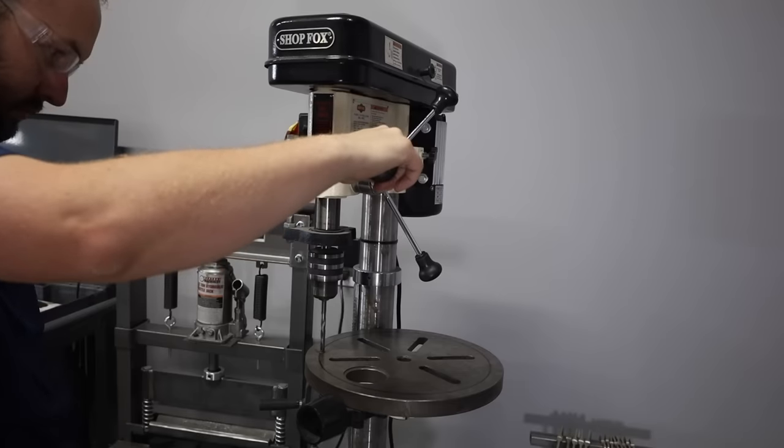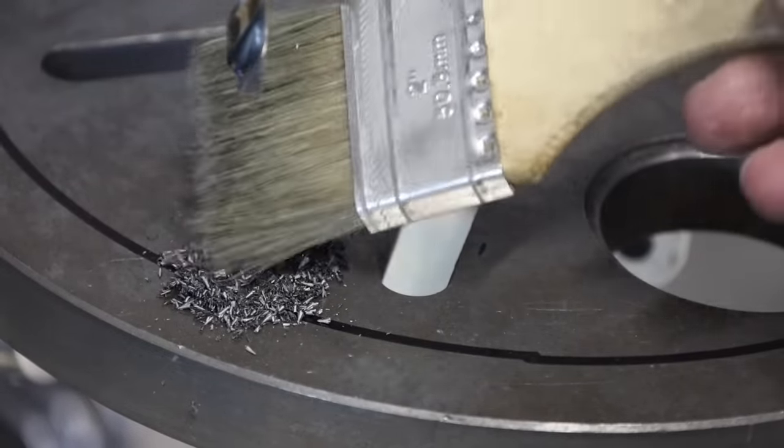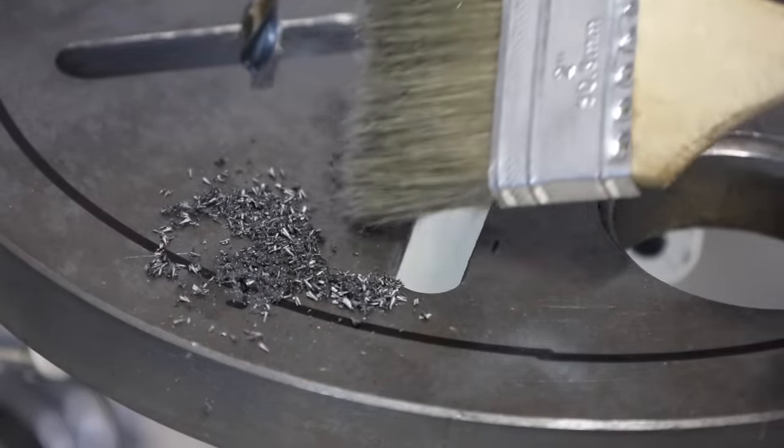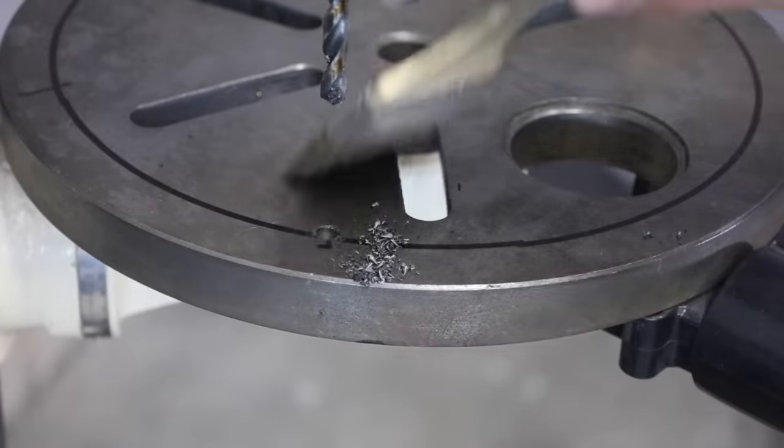You'll notice as I drill here, the cast iron drills quite a bit differently than you'd see steel or aluminum. You get these fine chips coming off here, but notice there's a little bit of a curl to a lot of them, and that's a good sign. That means that my bit is remaining engaged as I drill the hole.